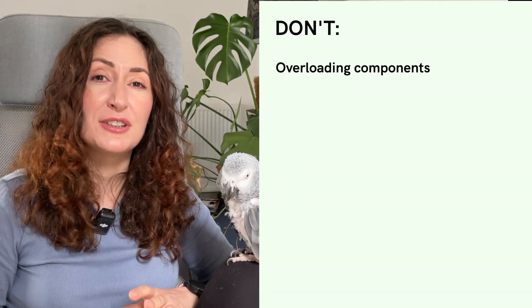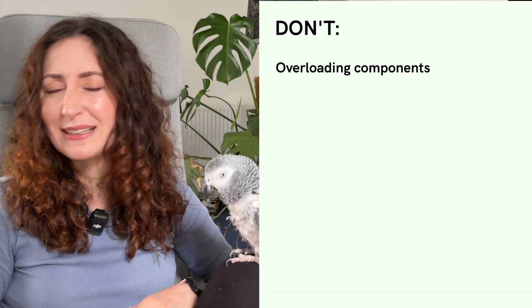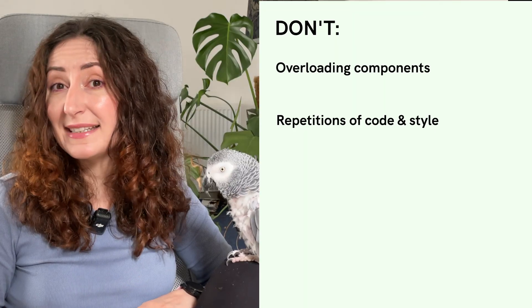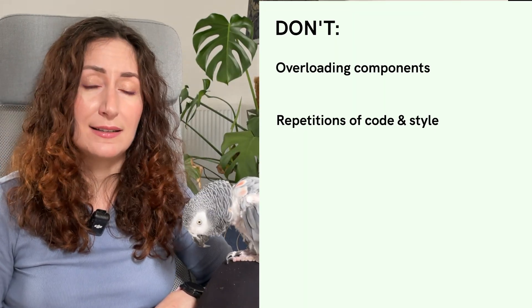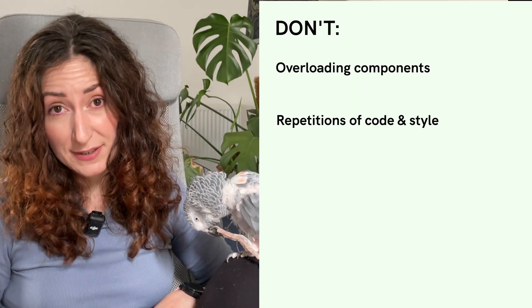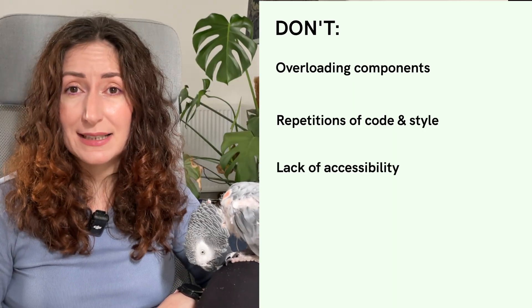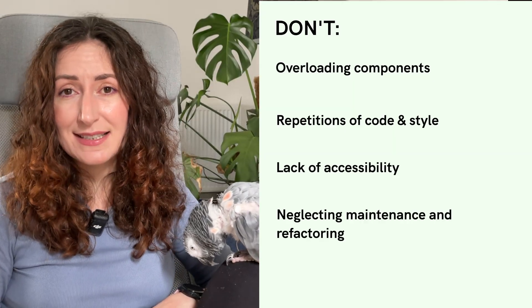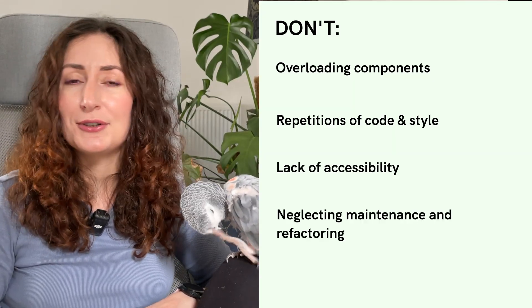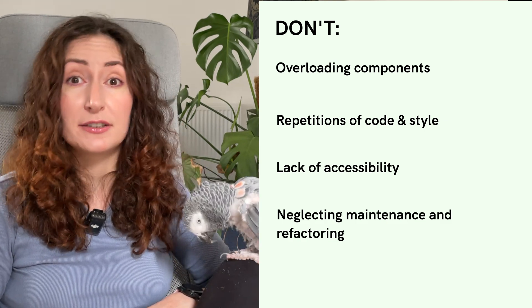Things you should definitely not do: overloading your components with too many props and variants — better keep it simple. Duplicating styles in different parts of the app — things should not repeat themselves, and your design system is built for that purpose. Neglecting accessibility, as already mentioned. And neglecting maintenance — design systems tend to turn into a monster if you do not clean up and refactor on time. Align your engineering team and design team early on to avoid misunderstandings.